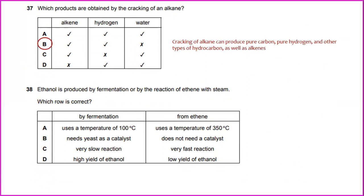Ethanol is produced by fermentation or by the reaction of ethene with steam. Which role is correct? During fermentation, we can see that it is a very slow reaction and the product is only about 10 to 15% ethanol. And a very fast reaction from ethene. The answer will be C.